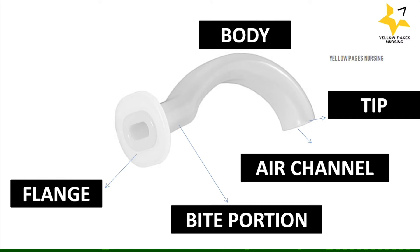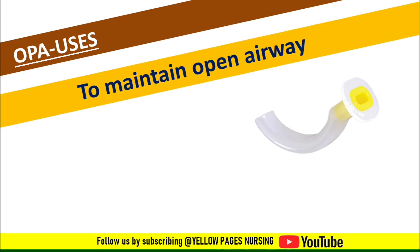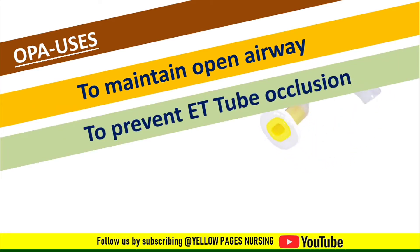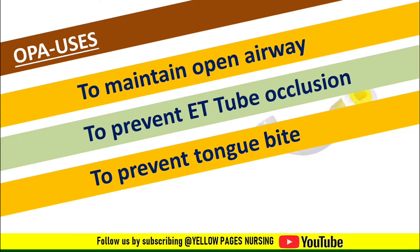Next is the bite portion, followed by the body, which curves over the tongue. Then the tip — the distal-most part of the airway, towards the base of the tongue — which acts as the air channel. Next come the uses of the oropharyngeal airway: to maintain an open airway, to prevent endotracheal tube occlusion.